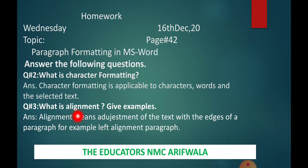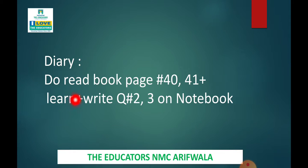Question number three: what is alignment, give example? Alignment kya hoti hai? Alignment means adjustment of the text with the edges of paragraph. For example, left alignment paragraph. Aapne apna homework achhe tariqe sa write karna hai. Aaj ki aapki diary hai: do read book page number 40 and 41. Learn plus write question number 2 and 3. Thank you so much.